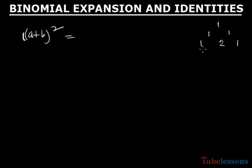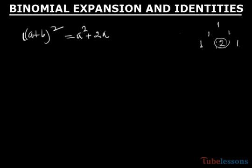The coefficients from the triangle are 1, 2, 1. When you write (a+b)², you start from the highest power, which is 2, so a². Then there is a coefficient 2, so write 2 here, reduce the power of a by 1, then b⁰, b¹, and b². So we get a² + 2ab + b², and this is called an identity.